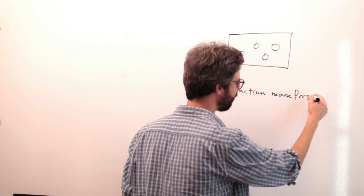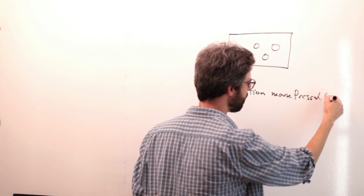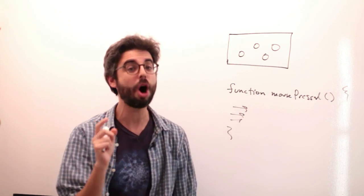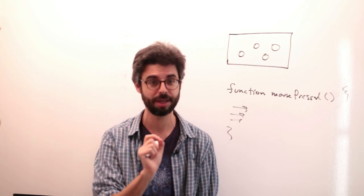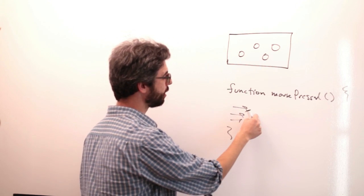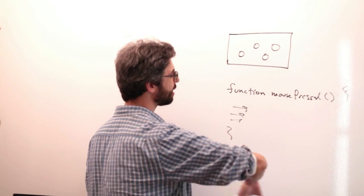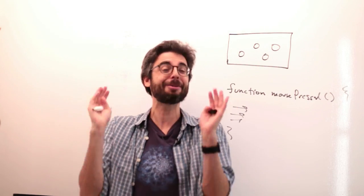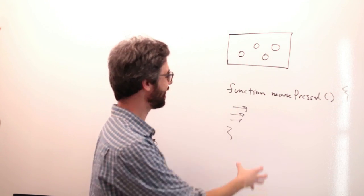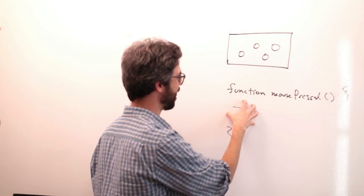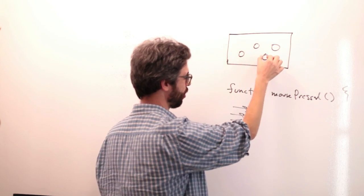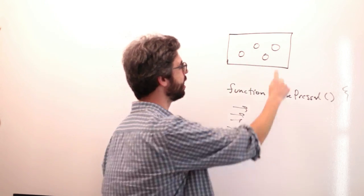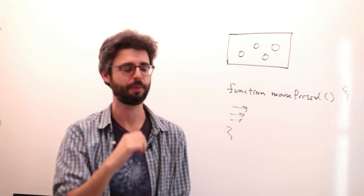If you write the function mousePressed, whatever code you put in there will automatically be executed when you click the mouse. This event fires for the whole page. What I'd like to do in this video is attach this event essentially to each one of these circles, so that each circle does something only to itself when you click on it.